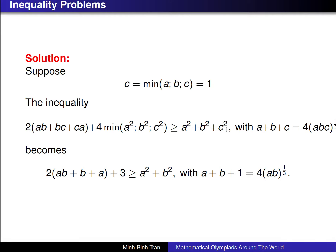This inequality is of order two because AB, BC, A², B², C² are all of order two, and A² + B² + C² is also of order two. This is why we can suppose, without loss of generality, that C is the minimum of A, B, C, and then we can scale C so that C = 1. The reason we can scale C to be one is that this inequality is homogeneous of order two.